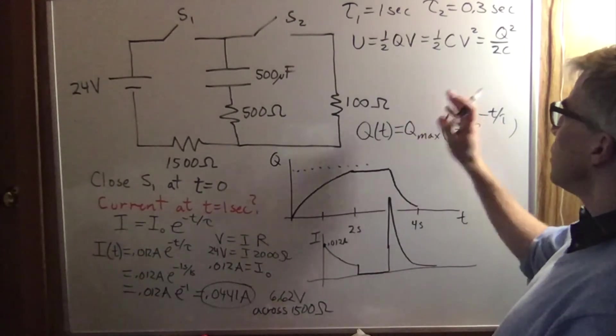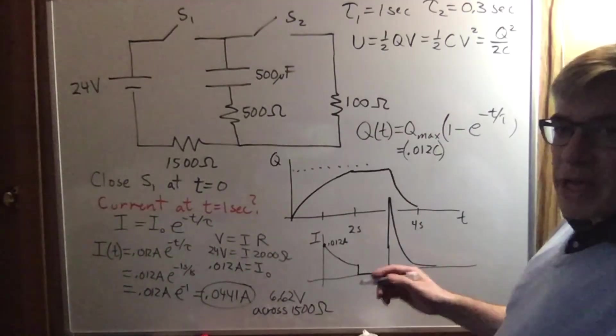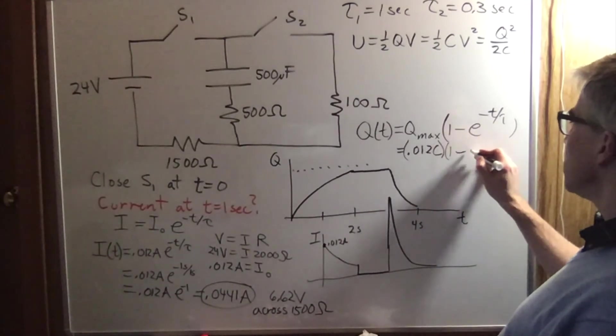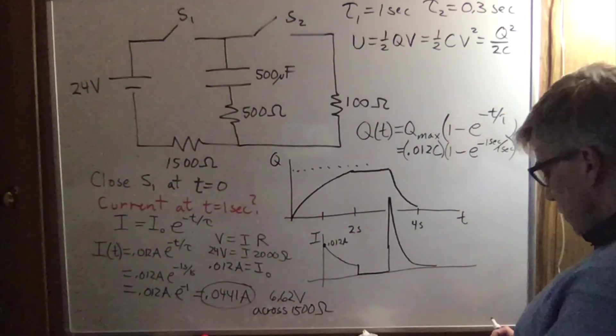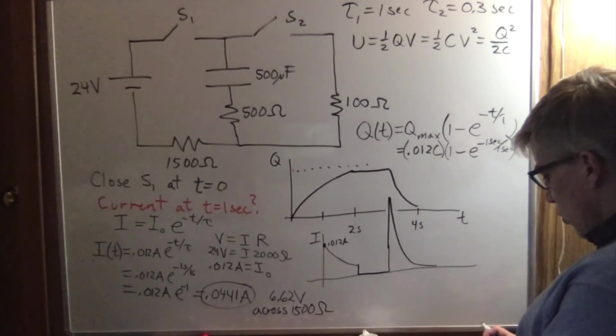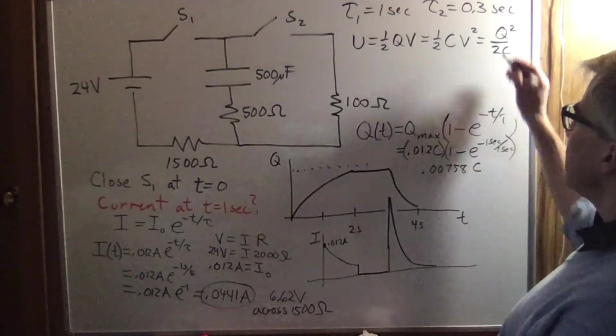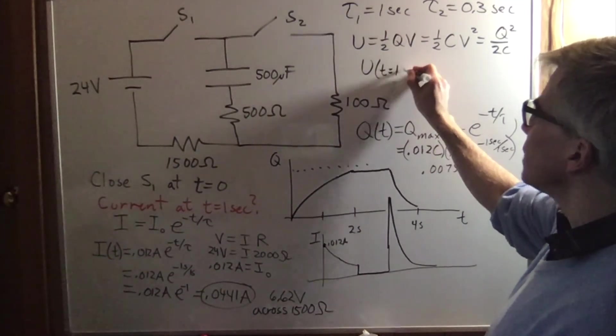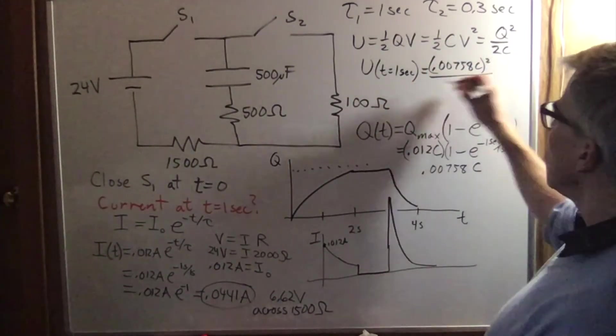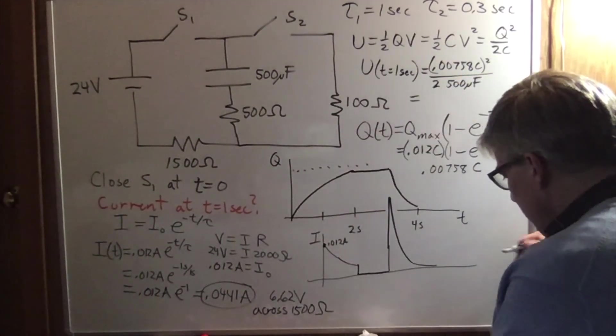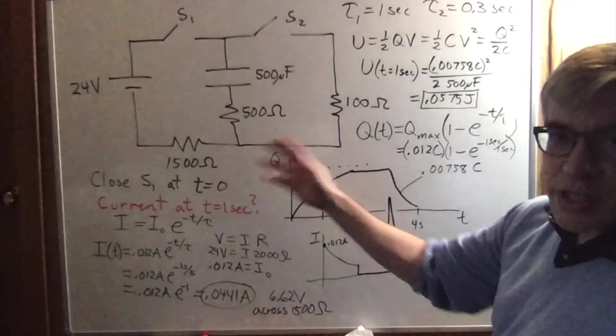The charge after one second when it's charging up would be the maximum charge, 0.012 coulomb, times one minus e to the minus one second over charging one second. So one minus e to the negative one times 0.012 is 0.00758 coulombs. And then the energy at t equals one second would simply be 0.00758 coulombs squared over 2 times 500 microfarad. And we get 0.0575 joules. Well, that covered a lot of possibilities for charging-discharging RC circuit.